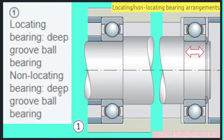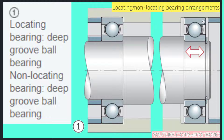The non-locating bearing is another deep groove ball bearing. You can see that the locating bearing is all blocked, whereas the non-locating bearing is not blocked on the top — it can slide.